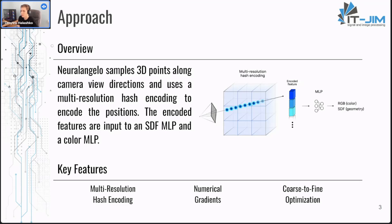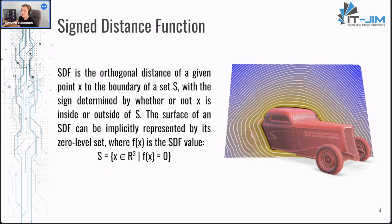Neural Angelo samples 3D points along the camera view direction, encodes the position, and those encoded features are input to an SDF multilayer perceptron and a color multilayer perceptron. Unique features of this approach are the adaptation of multi-resolution hash encoding, the use of numerical gradients, and a coarse-to-fine optimization strategy. We will go over all of these features in later slides, but for now let's see some more general information starting with SDF.